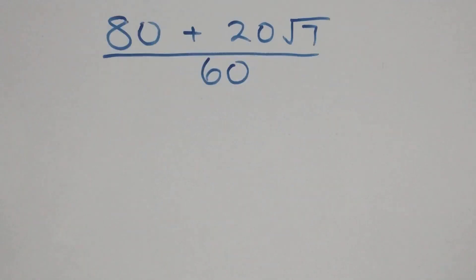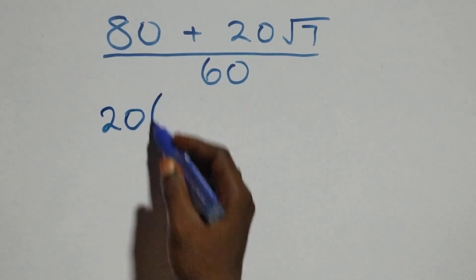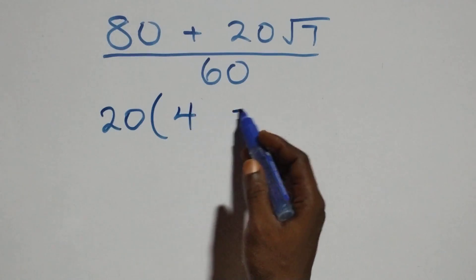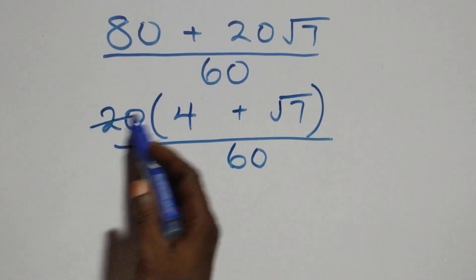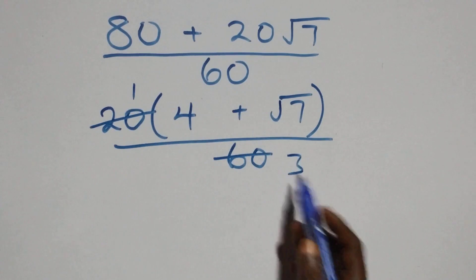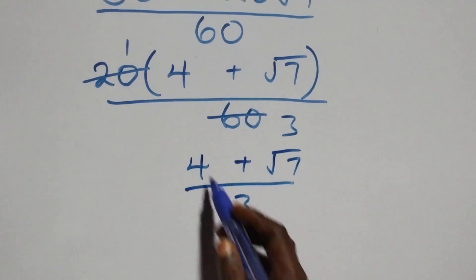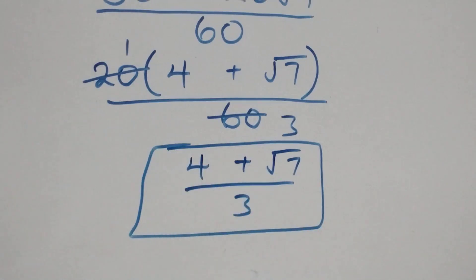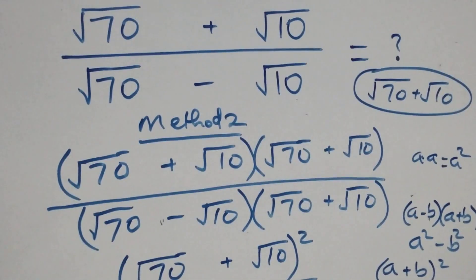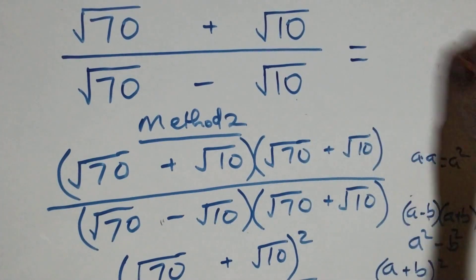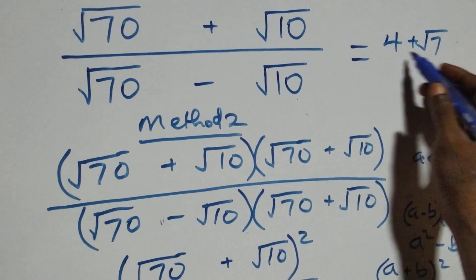We factor out 20 from the numerator: 20(4 + √7) over 60. Here 20 divides into 60 three times, giving us (4 + √7) over 3. This is the same answer we got with the first method. We can conclude that the simplified form of the given problem is (4 + √7) / 3.